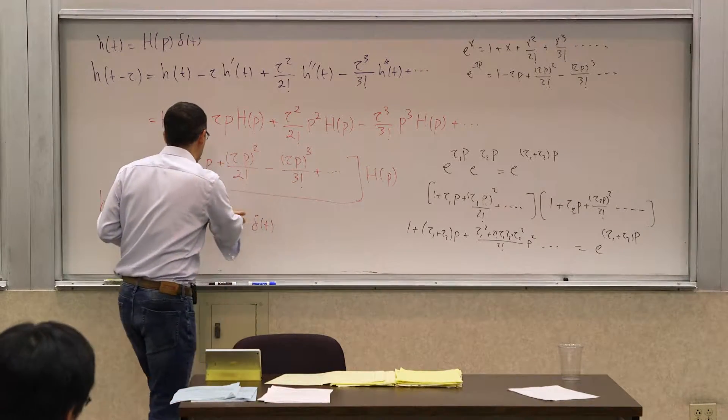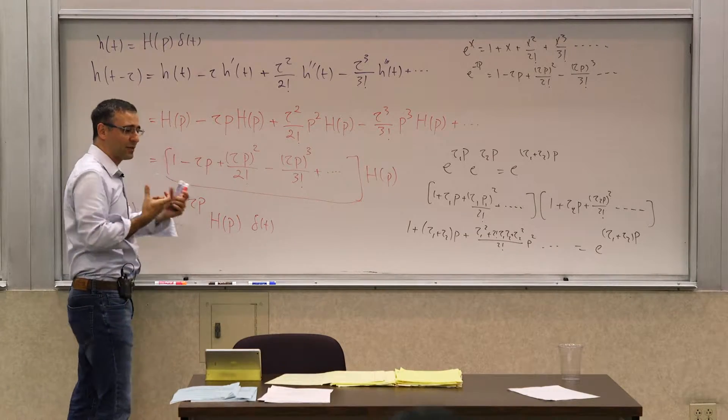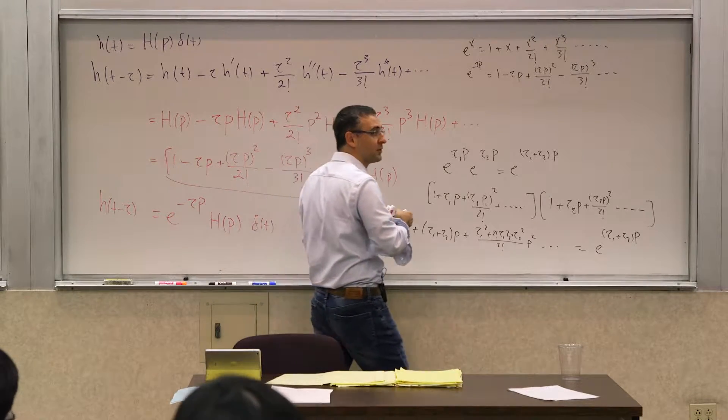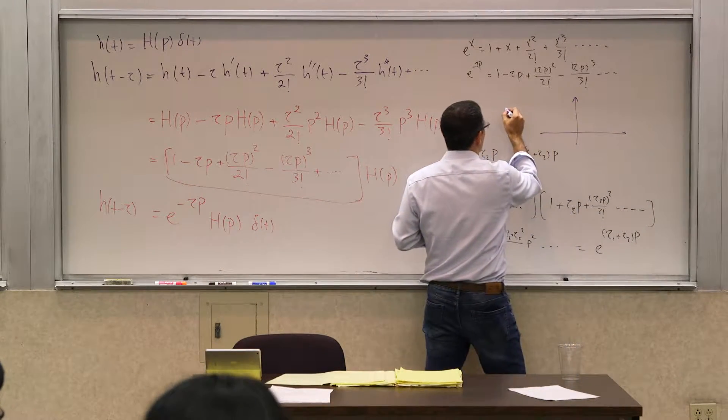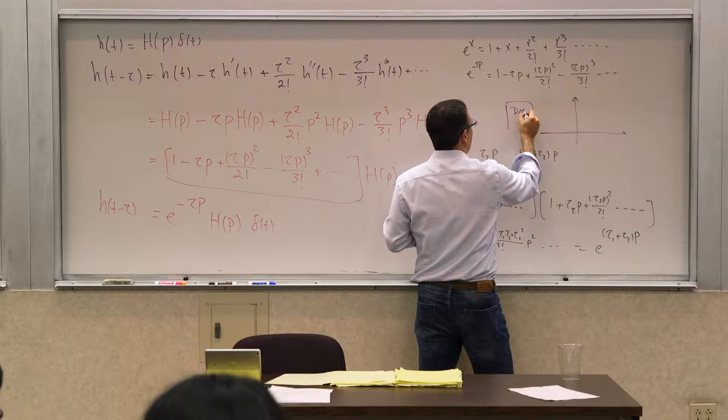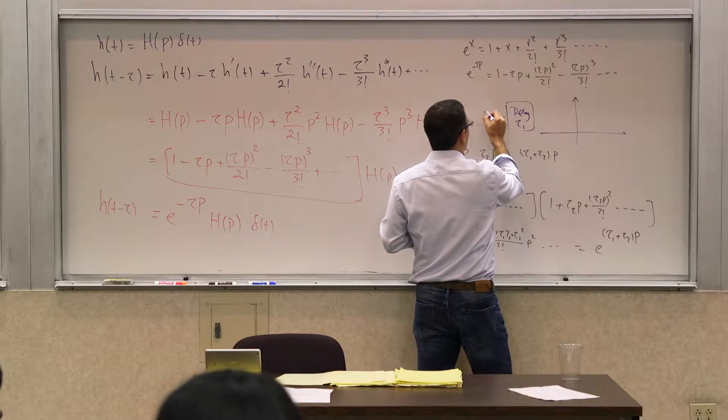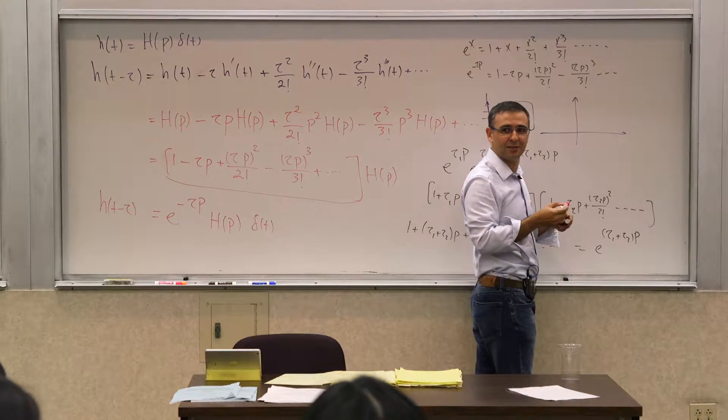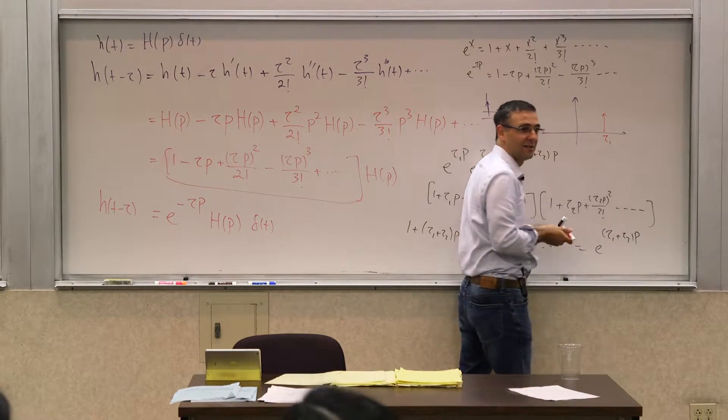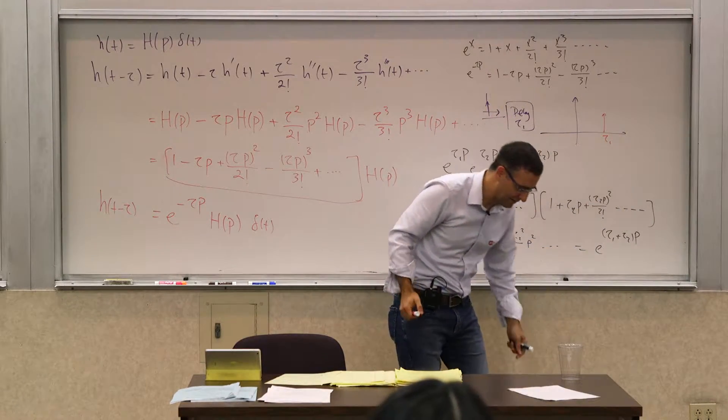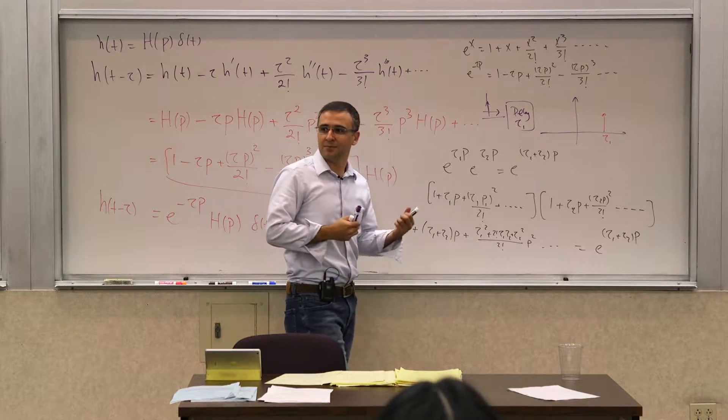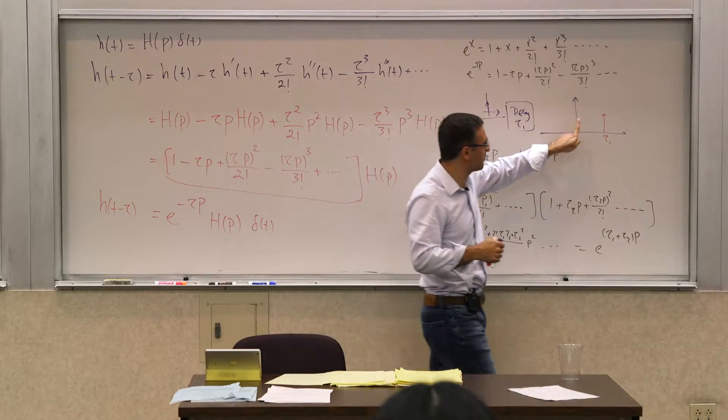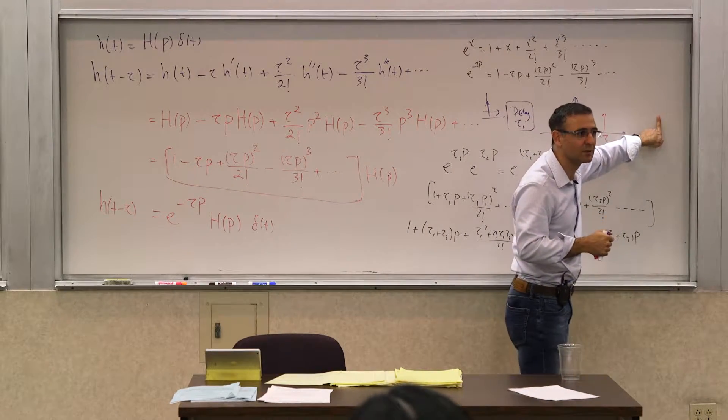So it has the property that it needs to have. So when in this operator domain you multiply, if you have two cascaded systems with delays, what is the impulse response of a system with a delay? What is the impulse response if this is a delay system, delay of tau 1? If an impulse comes, what's its impulse response like? It's an impulse at tau 1. It delays the impulse by tau 1. So now if you have two of them in cascade, you will have another one that would be shifted by tau 2 and then the overall response would be shifted by tau 1 plus tau 2.